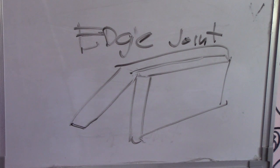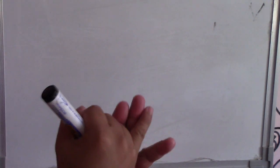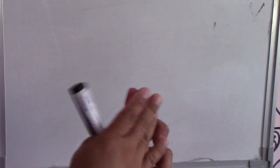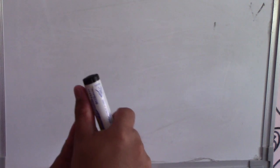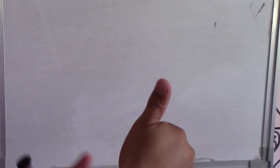So those are the five basic types of joints. To review: one is butt joint, two is corner joint, three is T-joint, four is lap joint, and five is edge joint. That's it for today guys — thanks for watching and have a nice day. Bye bye guys, see you next time.